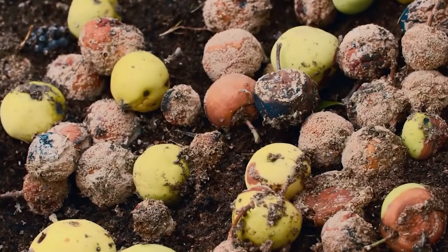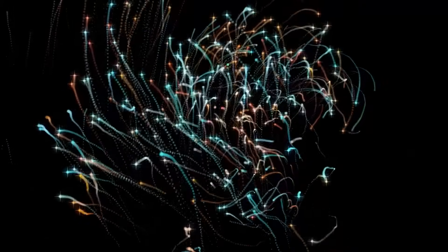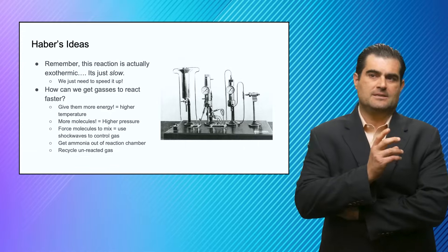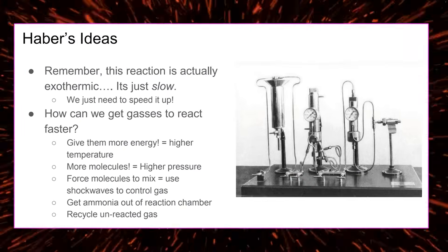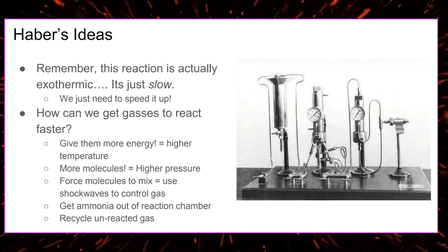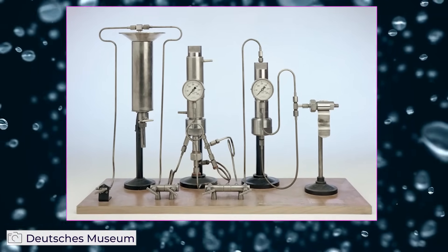For me, Haber's idea was to take the exothermic nature of making ammonia and use it to an advantage, to effectively recycle it and use the heat. The exothermic nature means it gives off heat, which you can use energy, and you have to only work on speeding it up. Once you have the right ingredients, all you must do is optimize it. How can you get gases to react faster? You can give them more energy, heat them up to higher temperatures. You can add in more molecules, increase the pressure. You can force the molecules to mix using shock waves to compress the gas together.